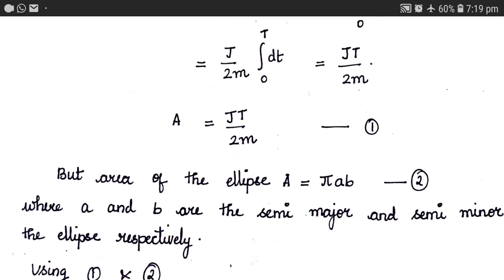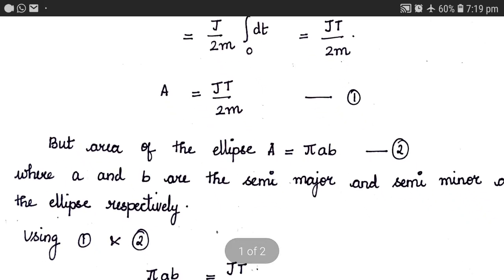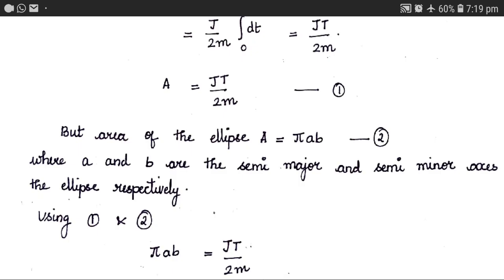This is the area obtained theoretically, but we also know the area of the ellipse A is given by pi times a times b. Here, small a and small b are the semi-major and semi-minor axes of the ellipse, which we are already familiar with.